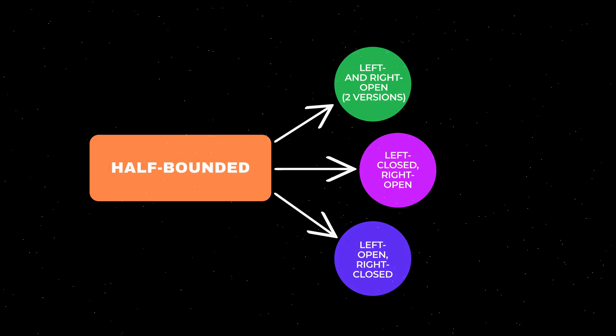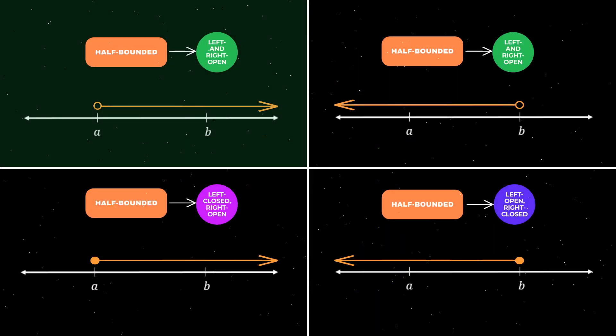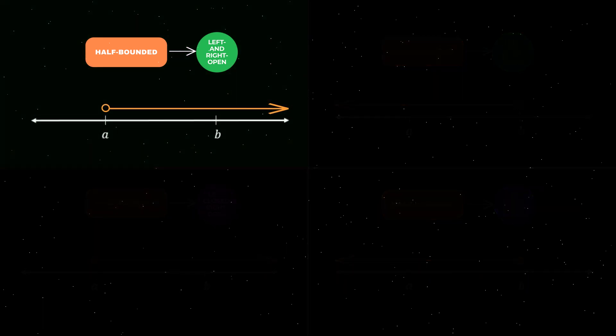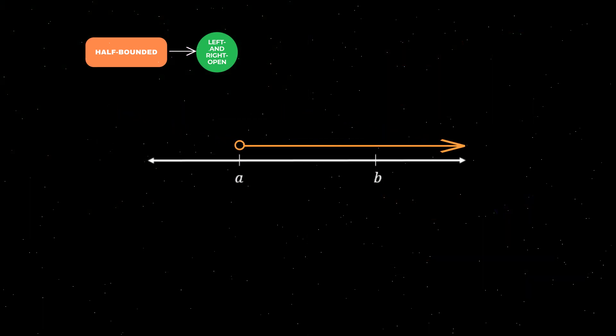Let's go through each of these types, starting with a half bounded interval that is left and right open. A general example of this type of interval is shown on the number line here. This interval is half bounded because it has one endpoint on one side — in this case the left endpoint A — and no endpoint on the other side, as indicated by the arrow. The interval is open on the left because the endpoint A is excluded, as indicated by the open circle.